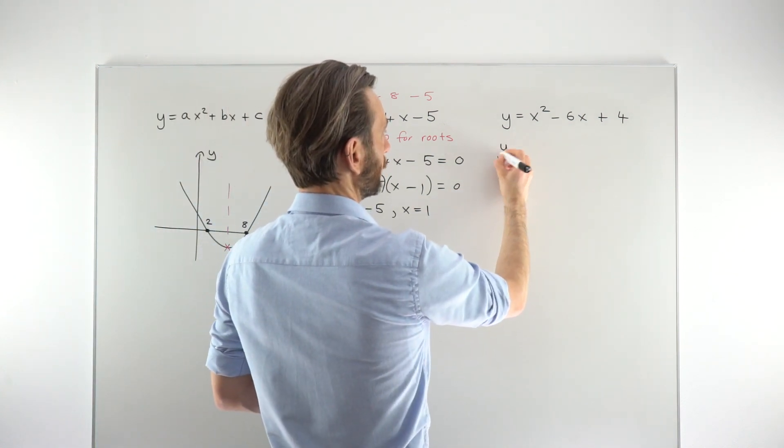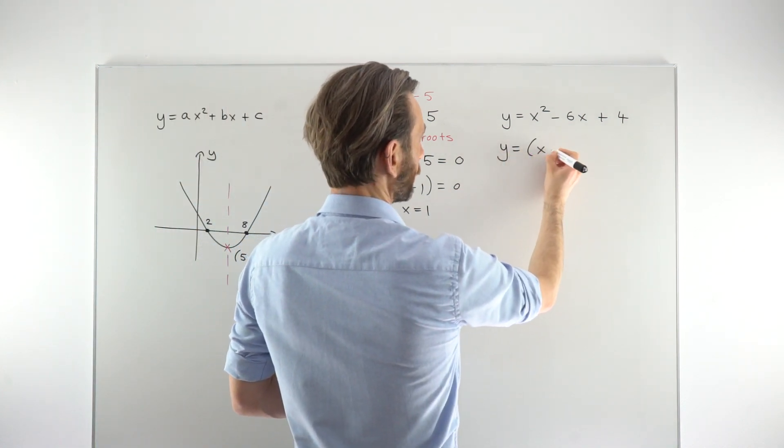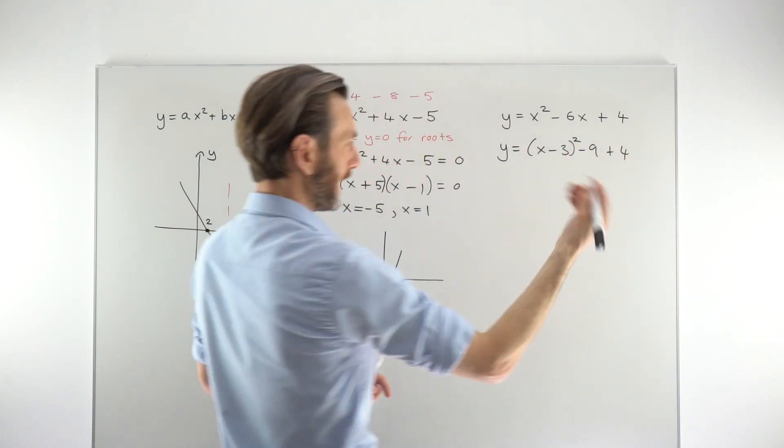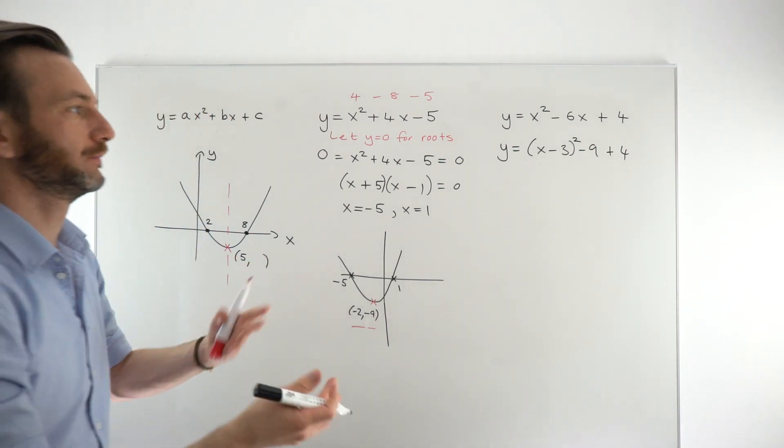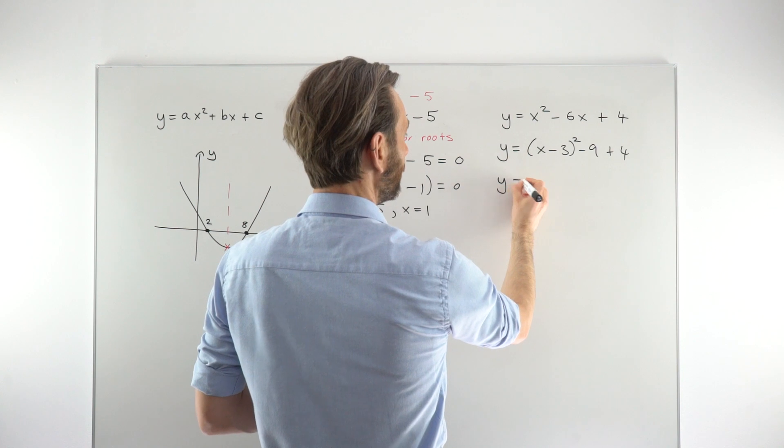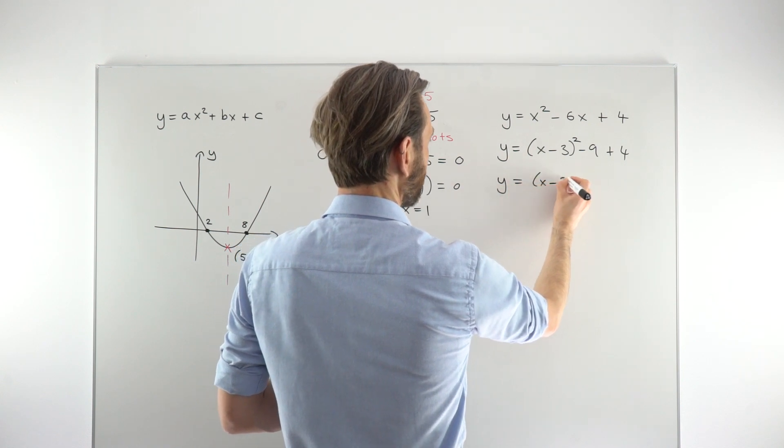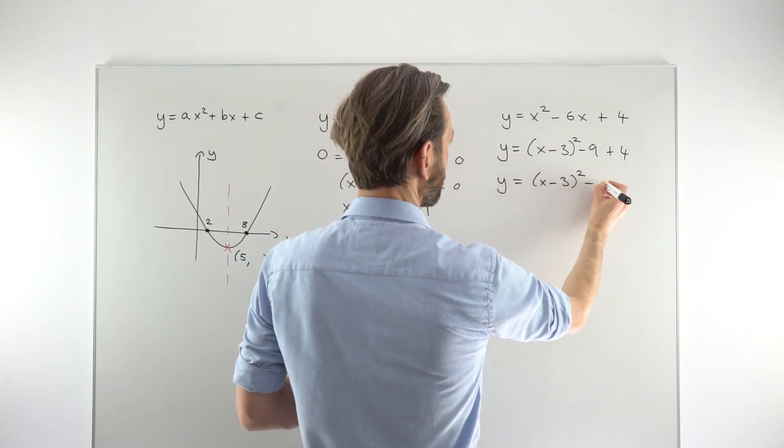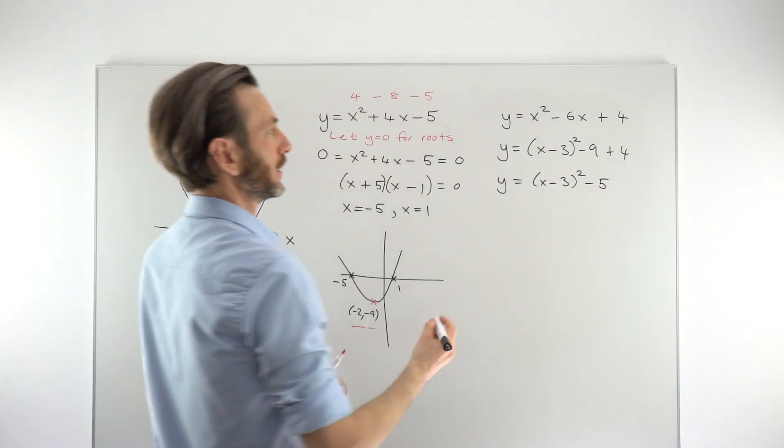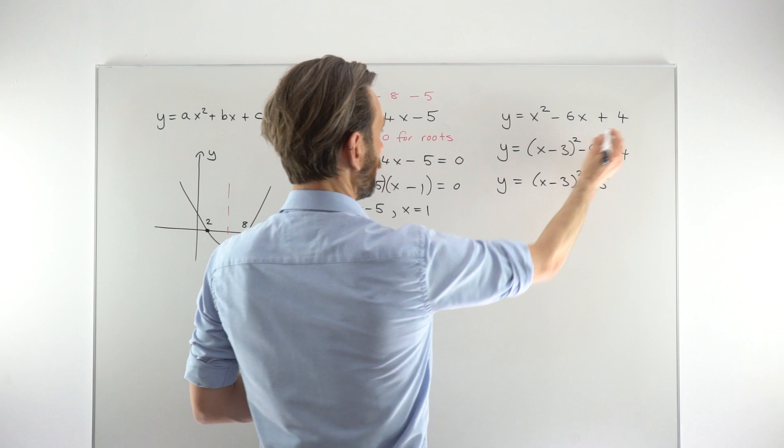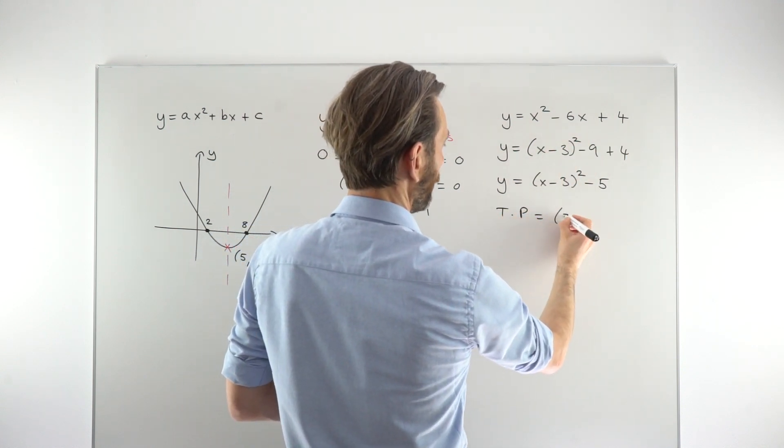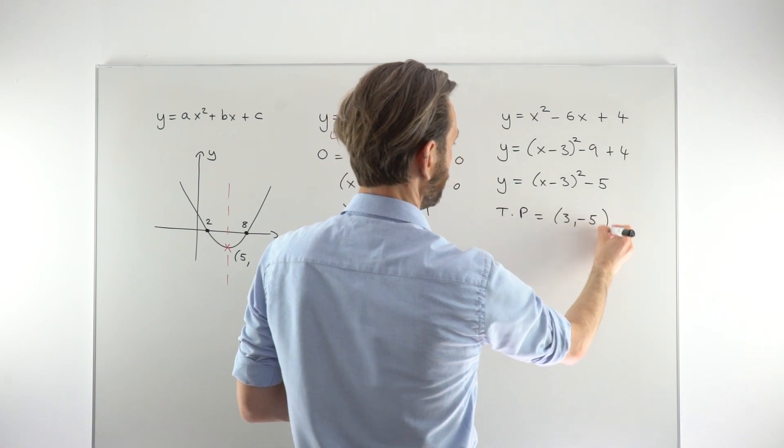We're just going to write it in completed square form. So in completed square form, we get x minus 3 squared minus 9 plus 4. And again, if you're not sure what I'm doing there, just figure it out later on by checking out the class on that topic. And then this would simplify to x minus 3 all squared minus 5. And we just go ahead and interpret that to get the turning point. So trinomial format to completed square format, interpreting that to get the turning point, we're going to get positive 3 minus 5. So again, just changing the number in the bracket, leaving the number outside as it is.